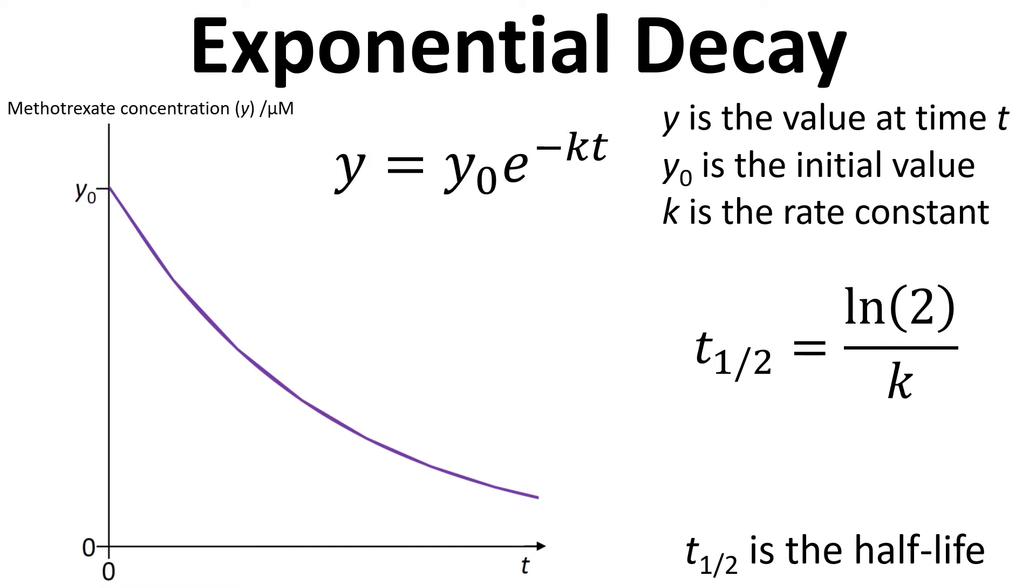Now in this example the y-axis is methotrexate concentration and the x-axis is time in hours. Then we know that y zero is 8.3 and that y is 1.2 at 24 hours and so we've got quite a bit of information here.